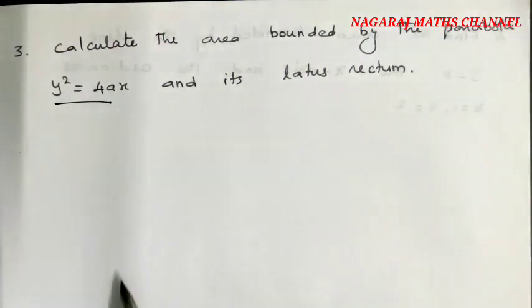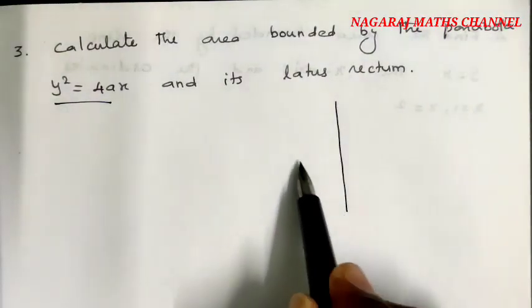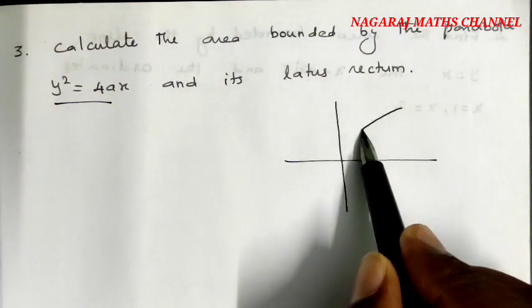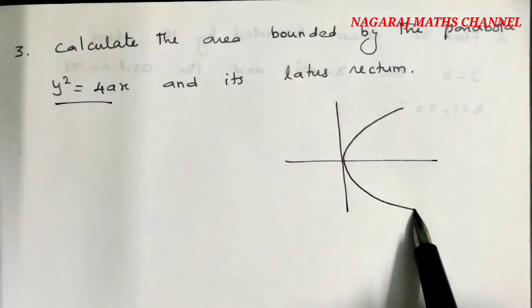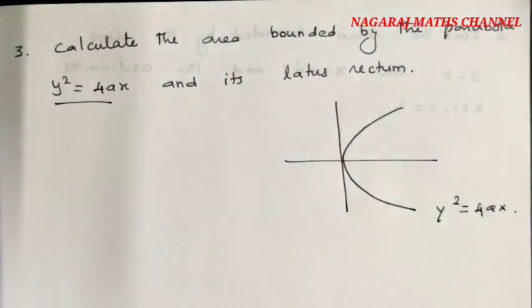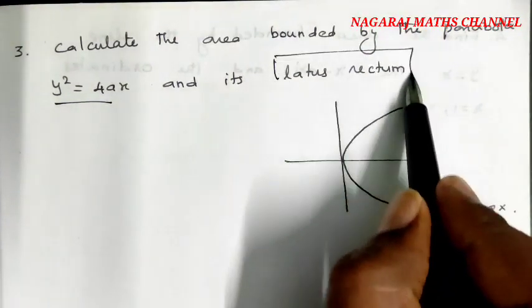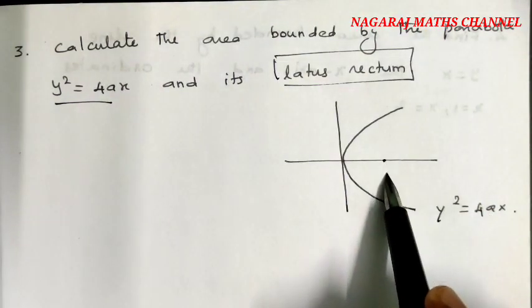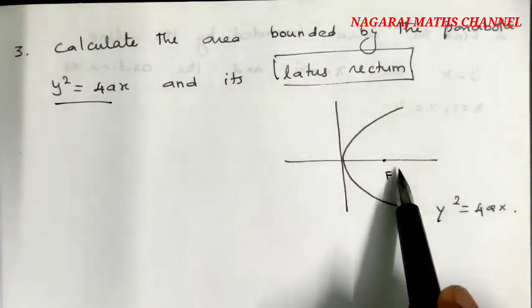y² = 4ax is an open rightward parabola that passes through the origin. The latus rectum is the line through the focus perpendicular to the x-axis. The focus is at (a, 0).